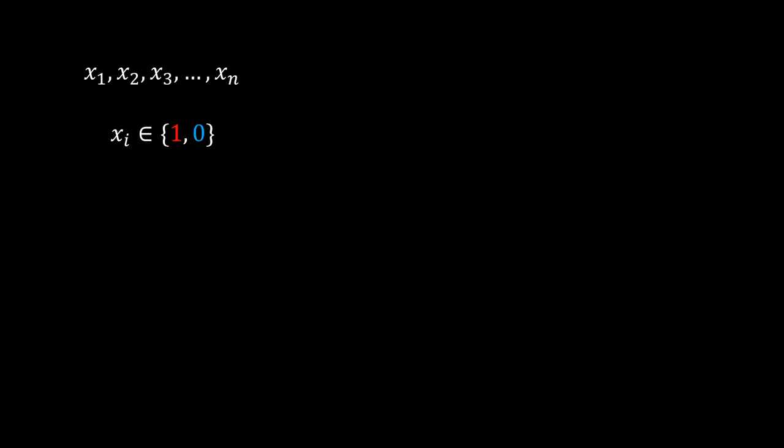There are three fundamental operators that we have already seen in our party example. First, we have OR, which quantifies that either the left variable or the right variable has to be true. In order to distinguish it from the English word, logicians use the uppercase V notation and call it disjunction. Similarly, we have AND, which asserts that both the left variable and the right variable have to be true. This is denoted similarly to an A, which is the first letter of AND.